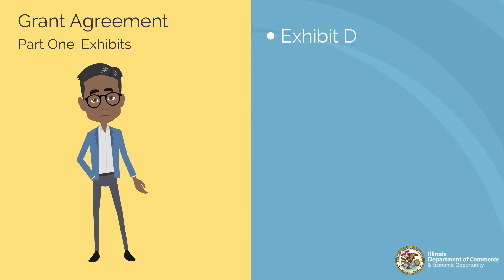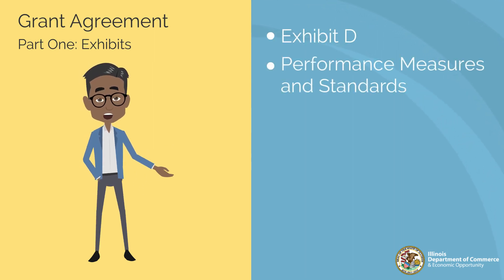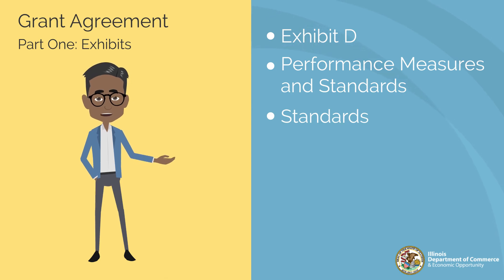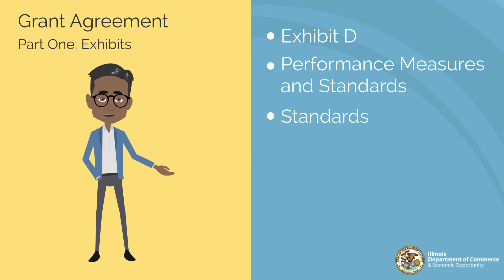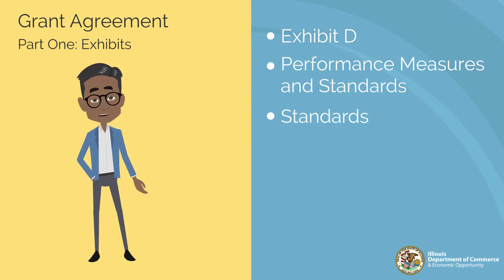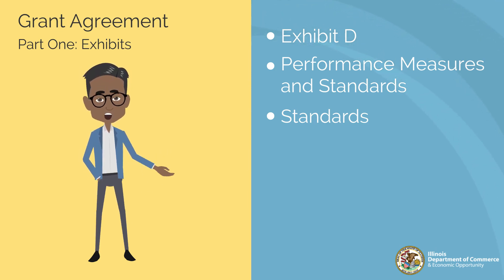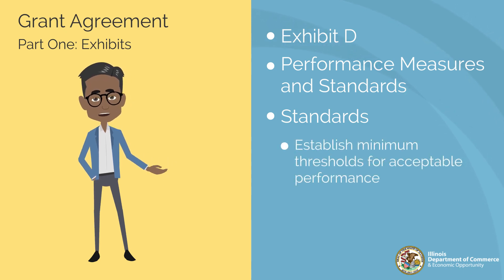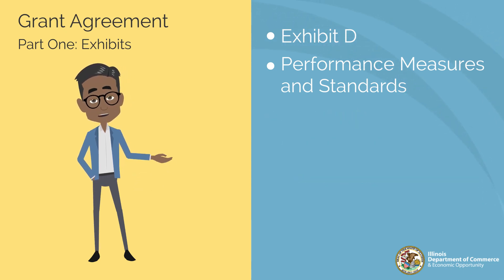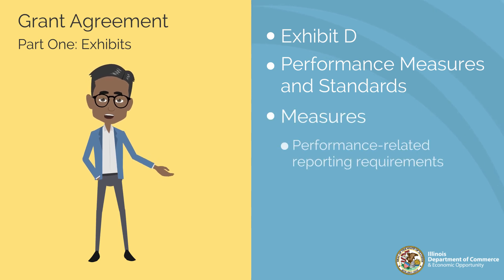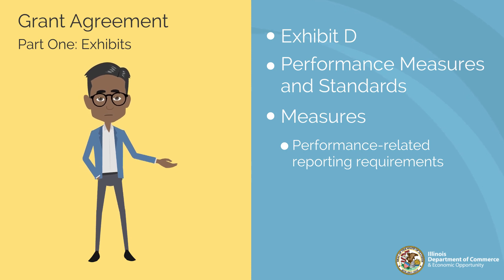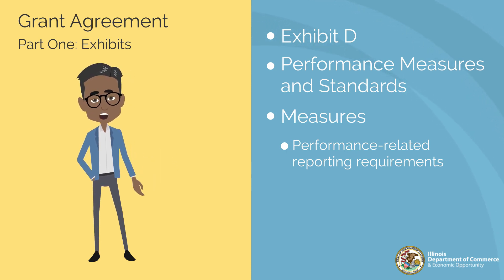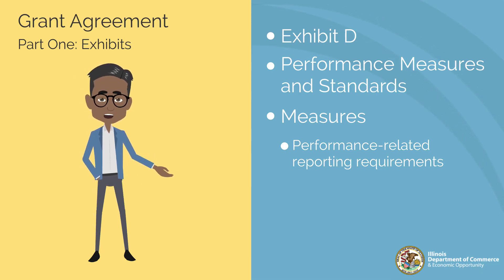Exhibit D outlines performance measures and standards. Performance standards include performance-related reporting requirements and help manage the grantee's delivery of programs or services under the terms of the grant. Performance standards may be set for performance measures to establish minimum thresholds for acceptable performance. Performance measures describe the performance measures that are to be evaluated throughout the grant term. This section identifies data points that the grantee must provide and includes the method and timeframe for submitting periodic performance reports.